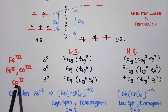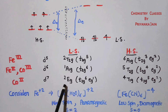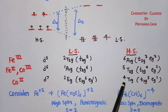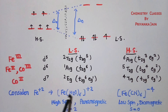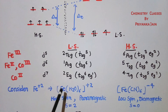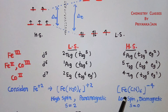For d7 (e.g., Co²⁺), the low spin complex has six electrons in t2g and one in eg (²Eg ground term), while the high spin complex has five in t2g and two in eg (⁴T2g). A classic example is Fe²⁺: Fe(H₂O)₆²⁺ is a high spin complex with S=2 and is paramagnetic, while Fe(CN)₆⁴⁻, being a strong field ligand complex, is low spin and diamagnetic.